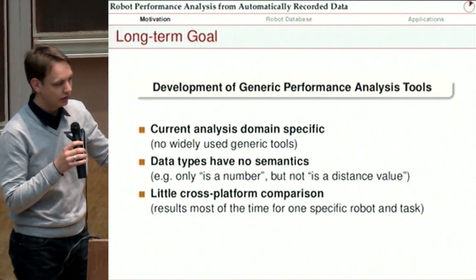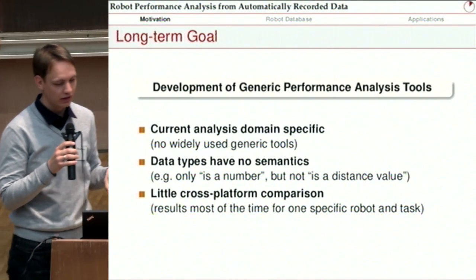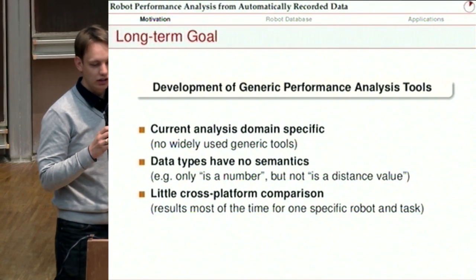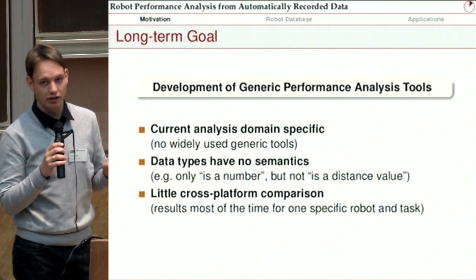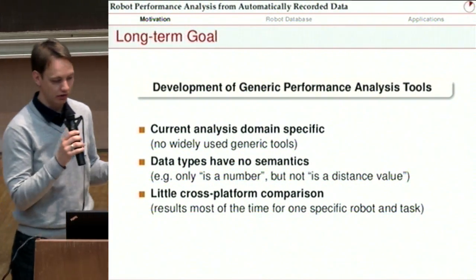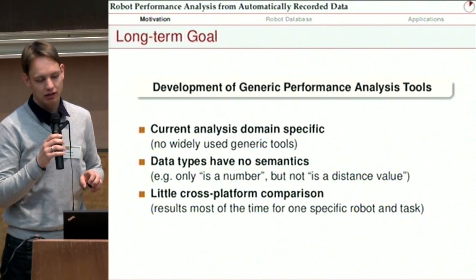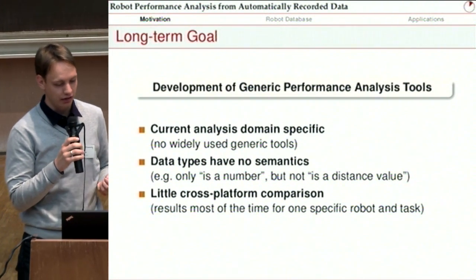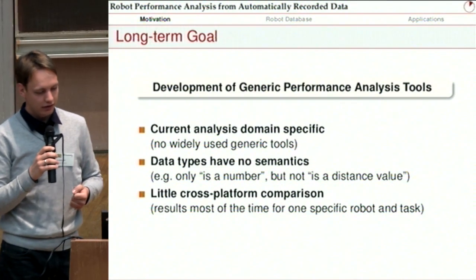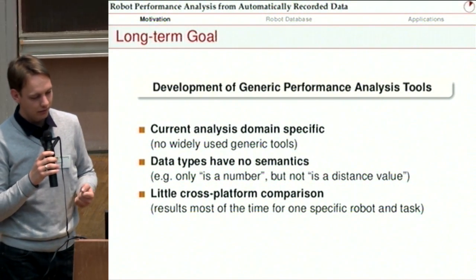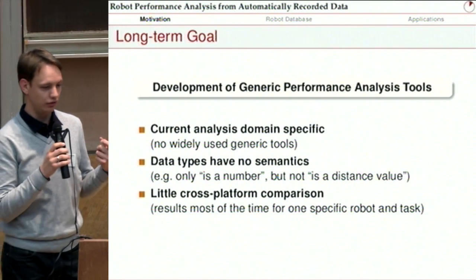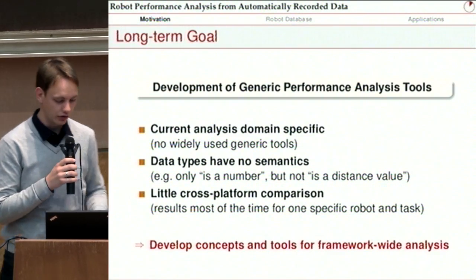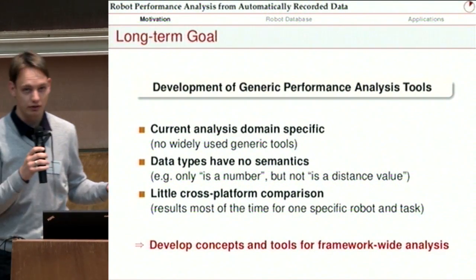The long-term goal that Ingo and I both agree on, and that's why we're working together mostly, is we want to develop tools for generic performance analysis of the robot. Currently the analysis is typically domain-specific — there are no widely used generic tools, and you do it on a particular platform in a particular domain. Another thing is that data types do not have any semantics at the moment — it's just a type, so it's a number but not a distance value, and that's something that Ingo will talk about. There's also little cross-platform comparison: if you do your experiments on a PR2, it's very hard to compare them to experiments done on any other platform or for another task. So the goal is to develop the concepts and tools for this framework-wide analysis.